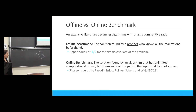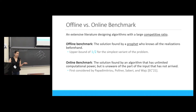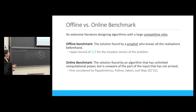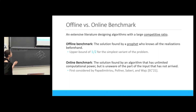Particularly for the stochastic variant of the problem, an alternative benchmark we can define is the online benchmark — the solution found by an algorithm that has unlimited computational power but has the same amount of information as we do about future arrivals. This online solution can be found using an exponential dynamic program, but our focus is on designing computationally efficient algorithms. This benchmark was first considered by Papadimitriou, Polnars, Sauberi, and Weitz for this particular online stochastic matching problem.